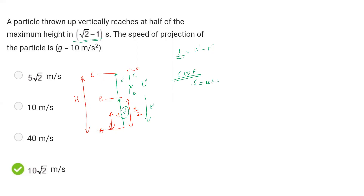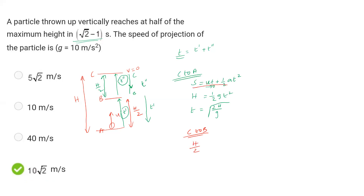Using the kinematic equation s = ut + ½at². With initial velocity u = 0, the distance C to A equals ½at². Now for the distance C to B: the C to B distance is h/2. Applying s = ut + ½at² with u = 0, we get ½g(t'')² for the C to B segment.